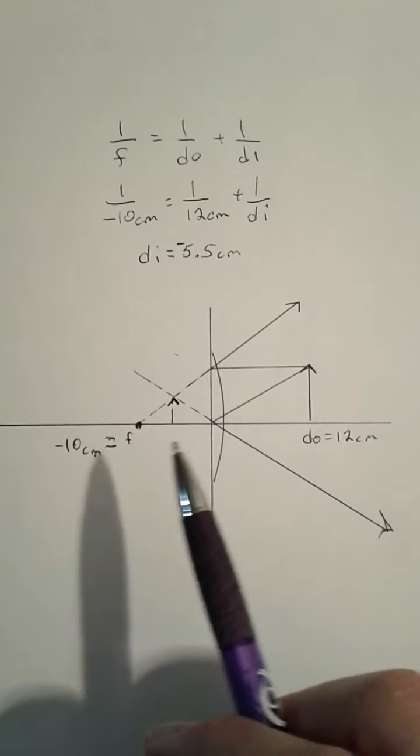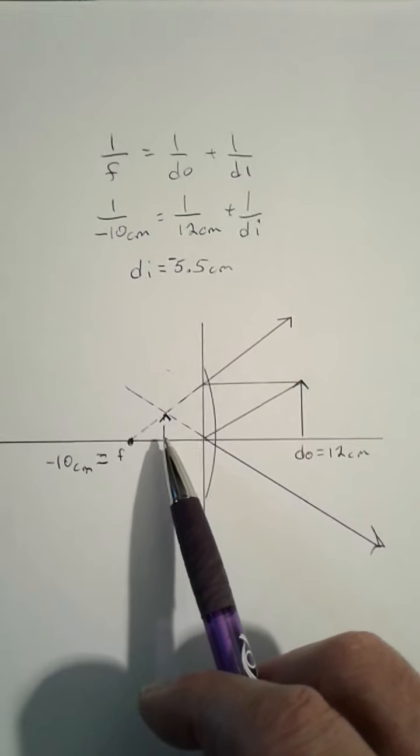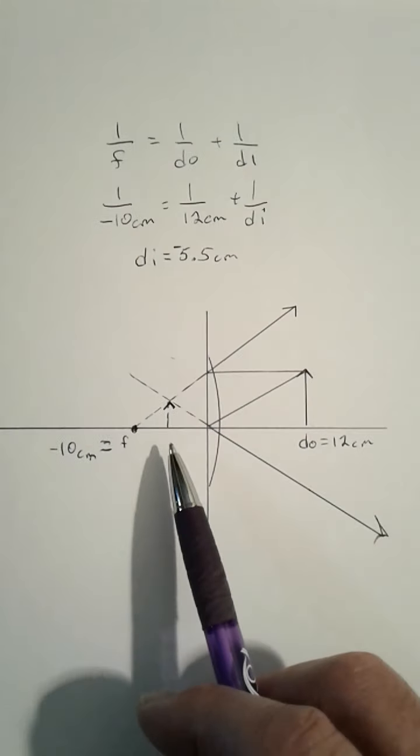That makes sense. There's 10 centimeters. That's just a little bit more than halfway. And it is a negative which means it's a virtual image.